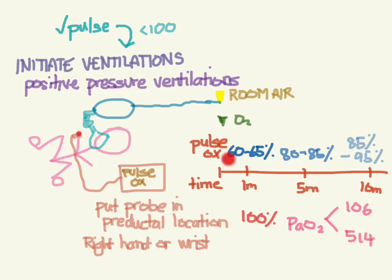You want to give these ventilations at about 40 to 60 breaths per minute, and your goal really is to get that heart rate above 100. You can also look for chest wall rise, but the goal is to get that heart rate above 100.